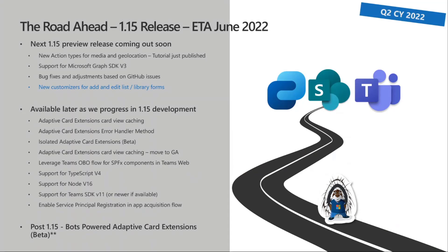There are not significant updates on the roadmap side. We will release the next version of 1.15 preview — not today, maybe next Tuesday. We were initially thinking this week, but we had some people out in Redmond and we're making sure the version is working properly. In that version you will get for the first time the new component type for customizing lists and edit forms in lists and libraries. As part of 1.15, estimated to be released end of June, it will have Node 16 support, TypeScript support, and a lot of additional settings and capabilities.